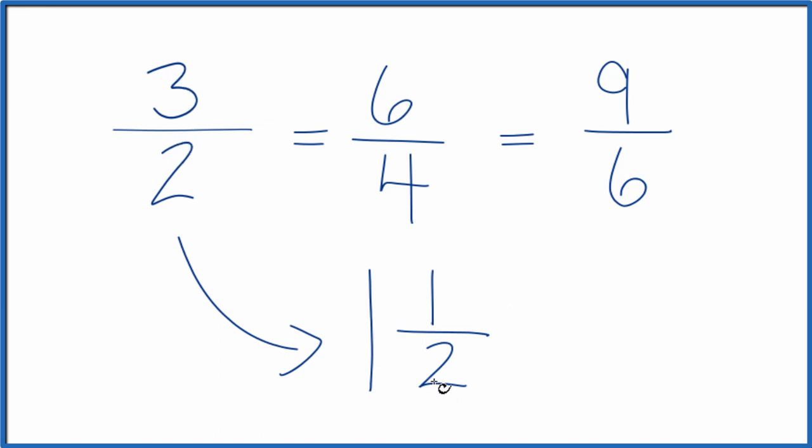You can check that. 1 times 2 is 2 plus 1. That's 3. Keep the denominator the same. 3 halves.